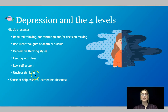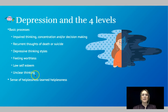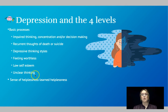At the basic processes level for depression, we have impaired thinking, concentration, and decision making. There are some recurring thoughts of death or suicide — not in everybody with depression, but it can occur. Having depressive thinking styles like feeling worthless, having low self-esteem and self-value, are all part of basic processes. A sense of learned helplessness can also occur in people with depression, which we talked about in the learning topic.